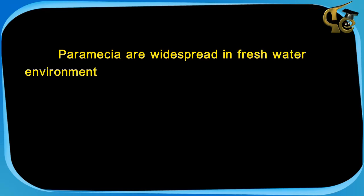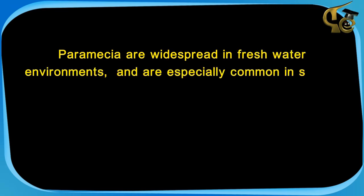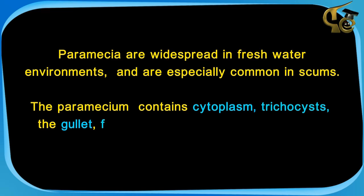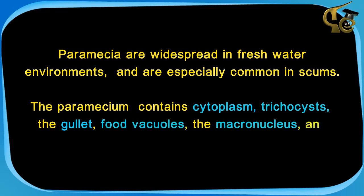Paramecia are widespread in freshwater environments and are especially common in scums. The paramecium contains cytoplasm, trichocysts, the gullet, food vacuoles, the macronucleus and micronucleus.